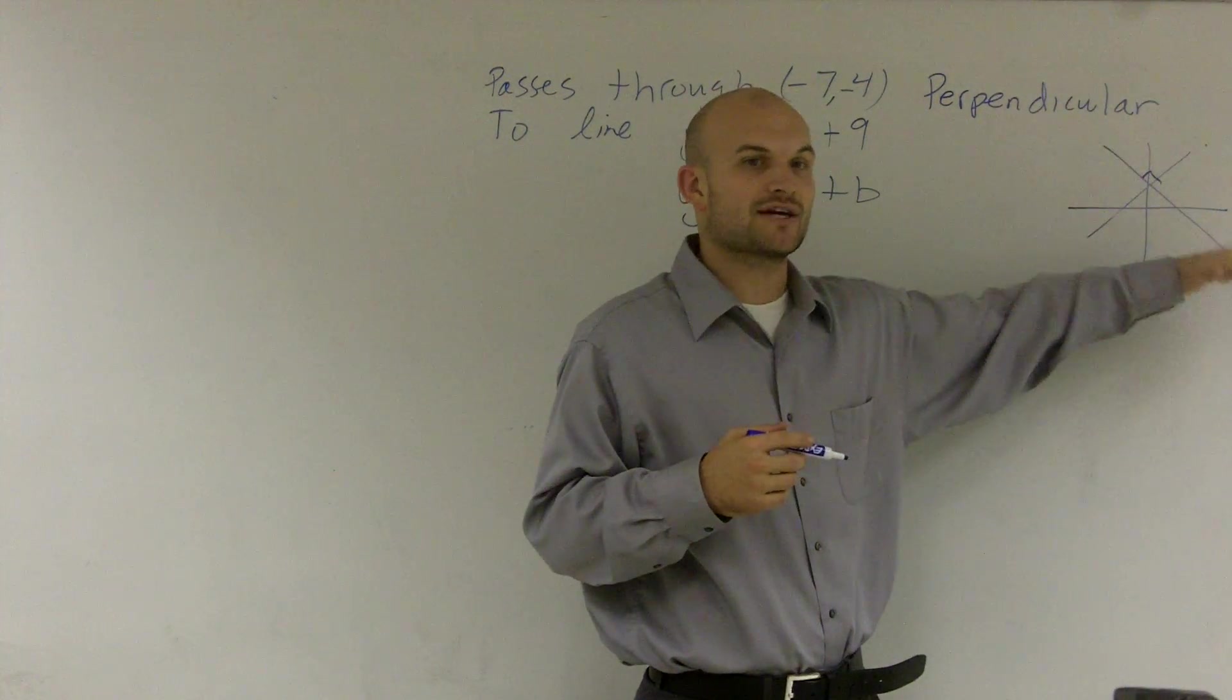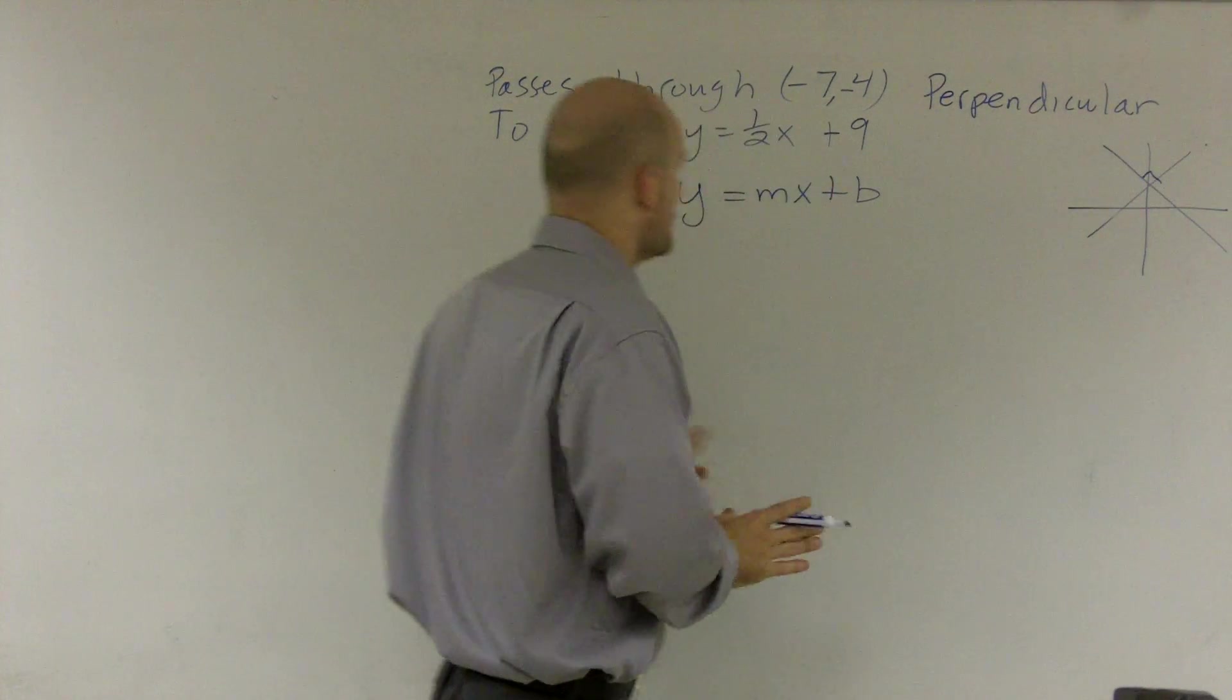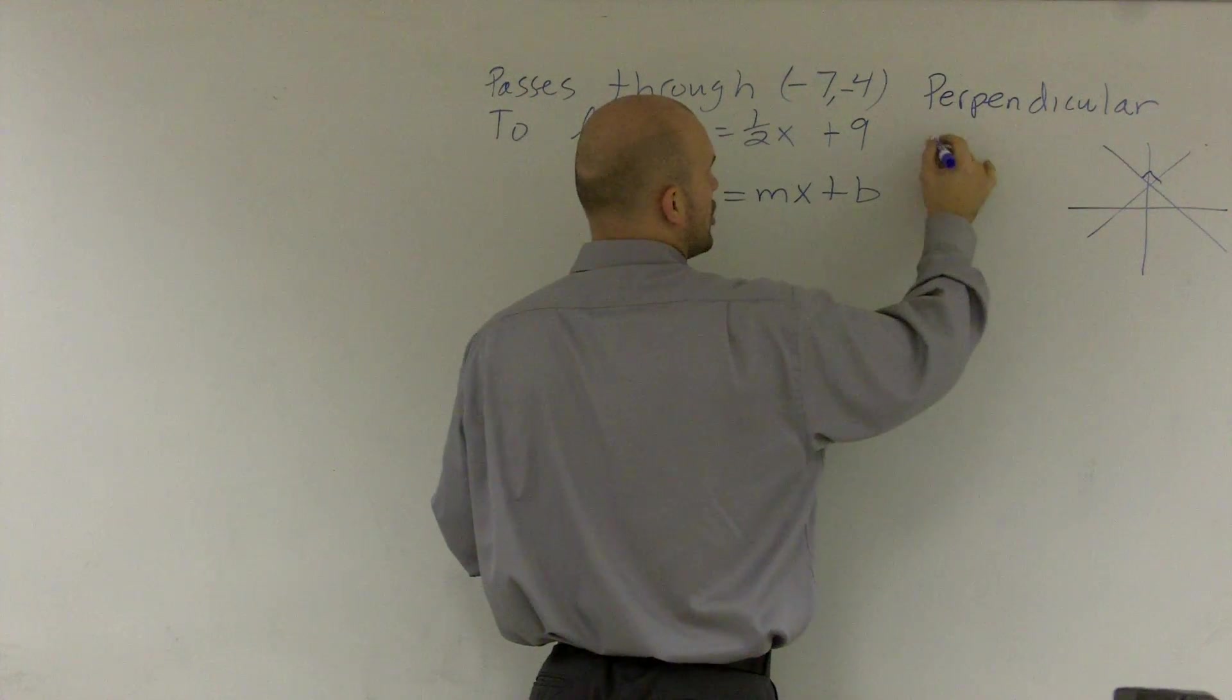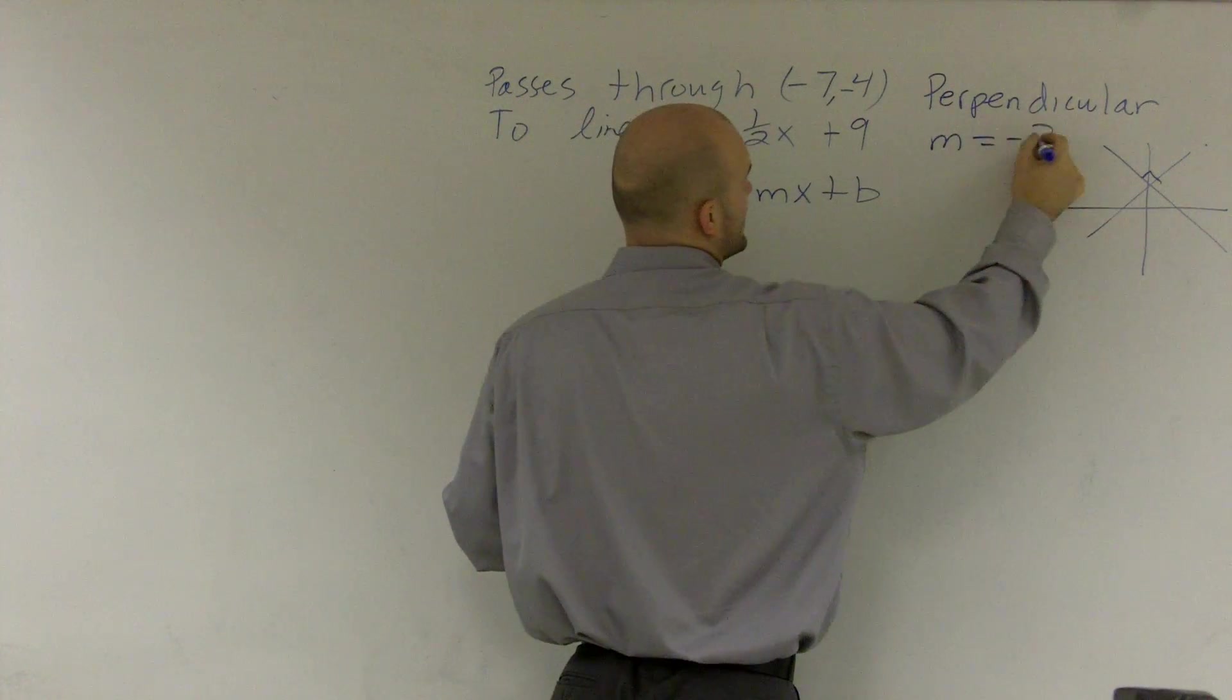Or if it was going in the negative direction, it'll now go in the positive direction. So our new slope, our perpendicular slope, if this is one half, my new slope is going to be m equals negative 2 over 1.